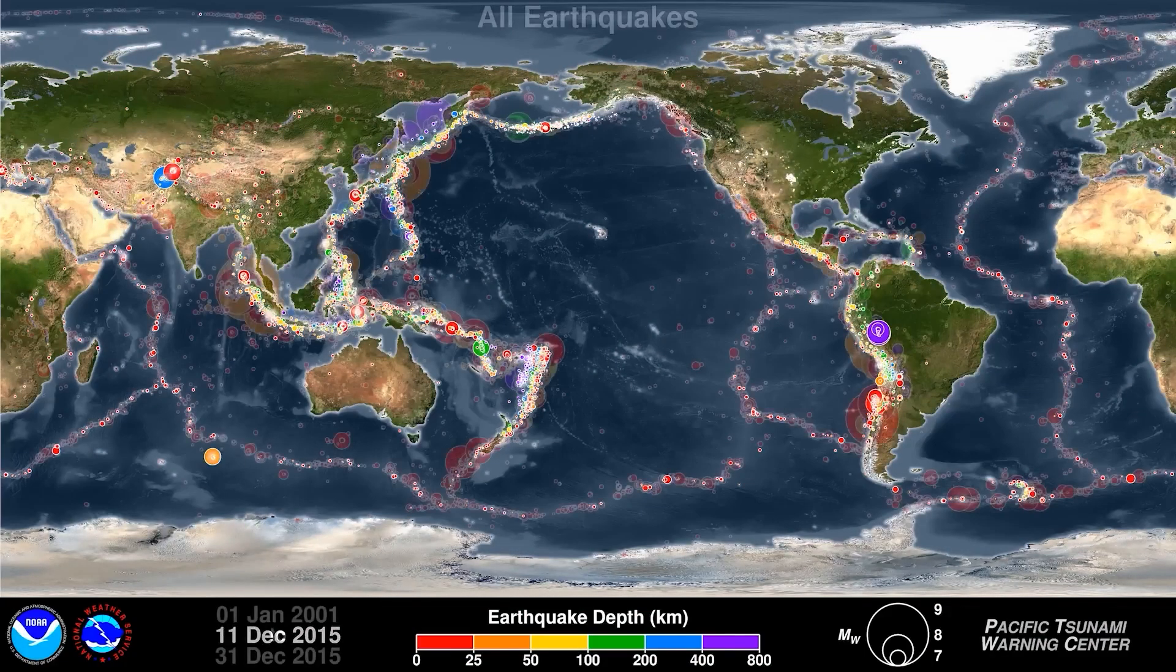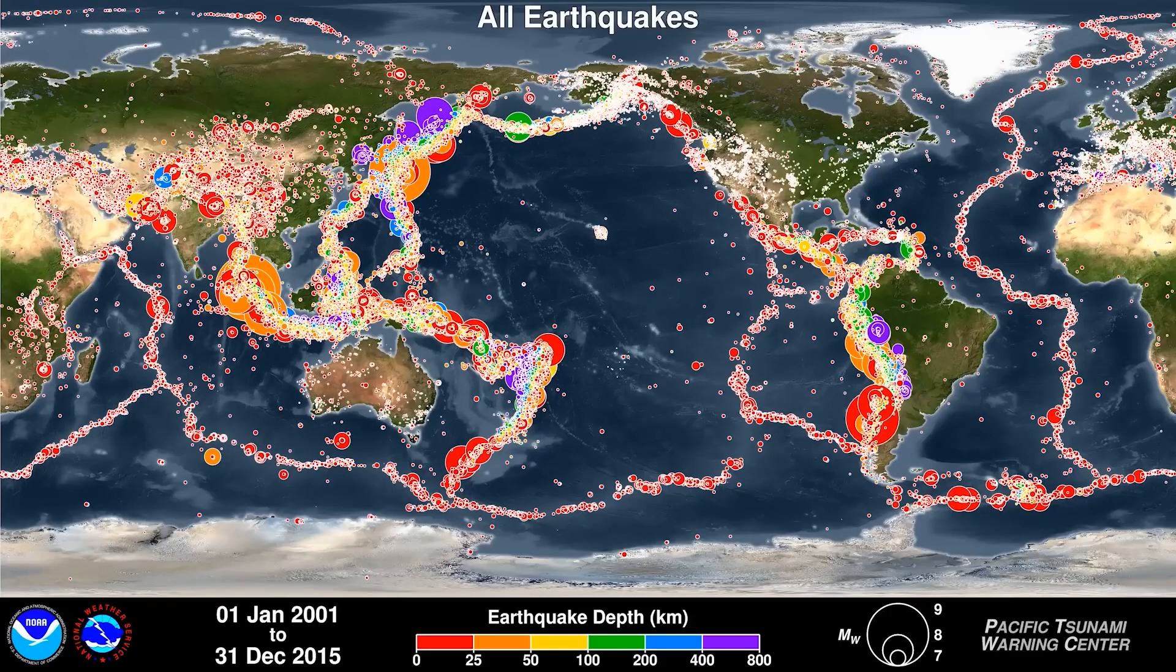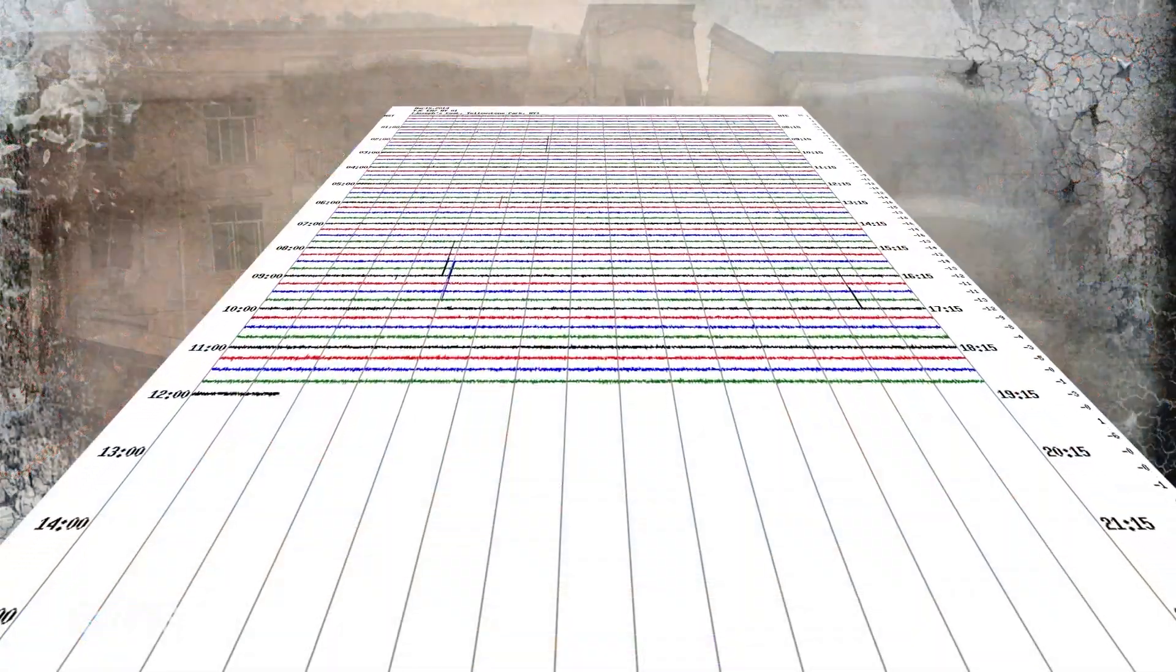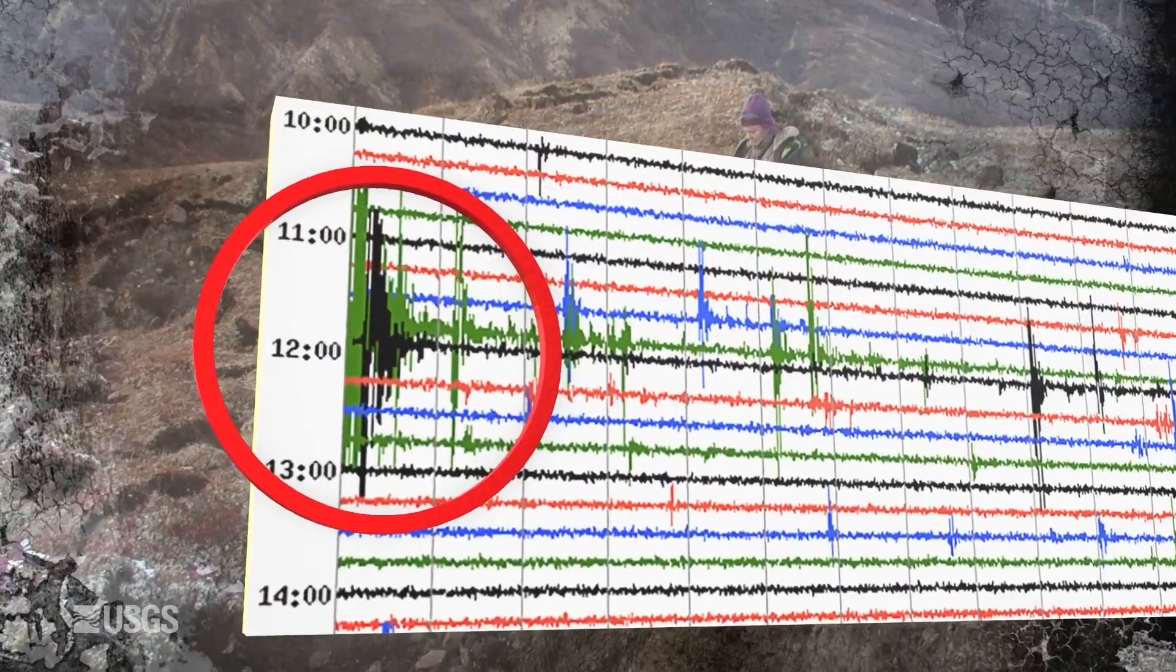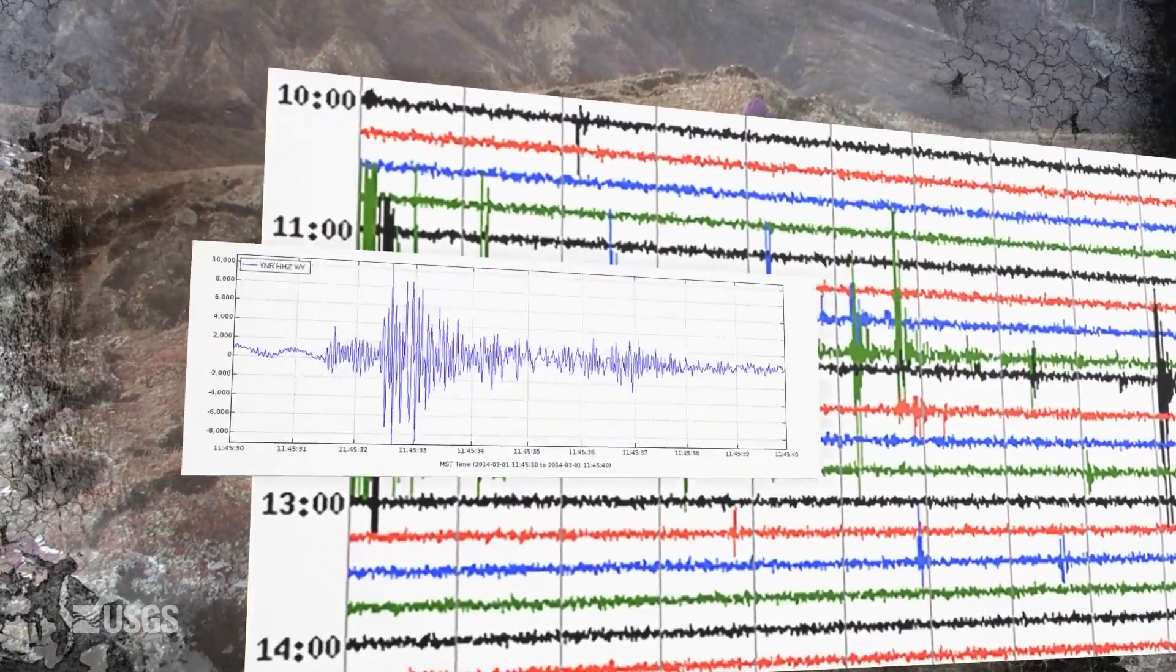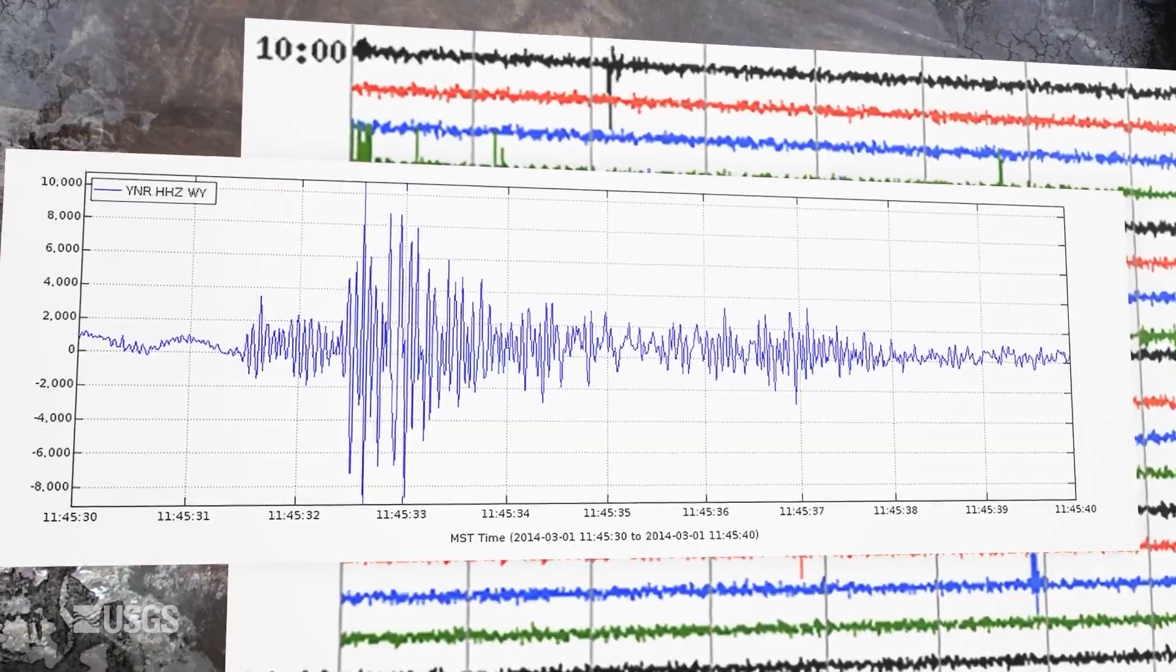Transform boundaries are crucial to understanding earthquake patterns. Scientists closely monitor these boundaries to predict potential earthquakes, giving people time to prepare and build safer communities. So by studying how plates move at transform boundaries, we can better understand how the Earth's crust works and improve early warning systems for earthquakes.